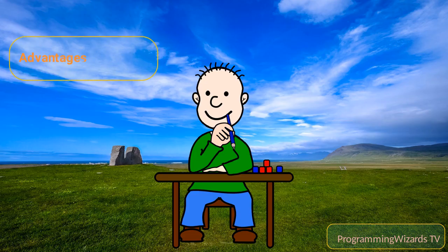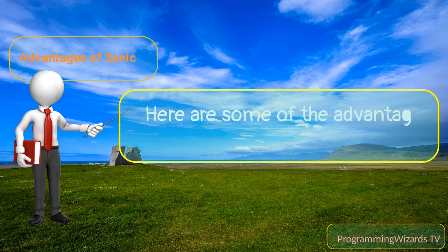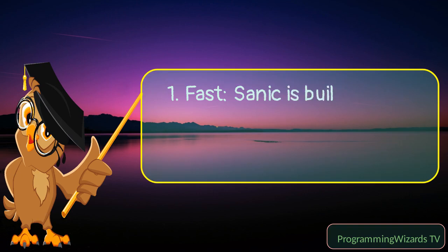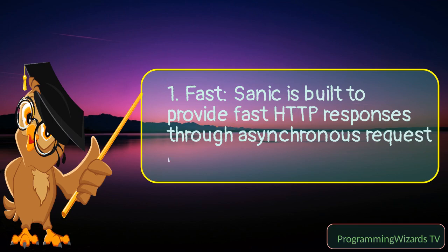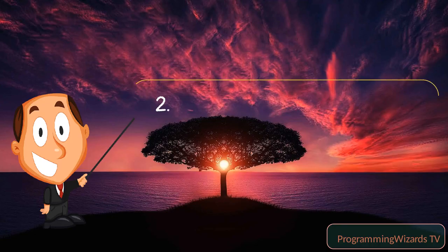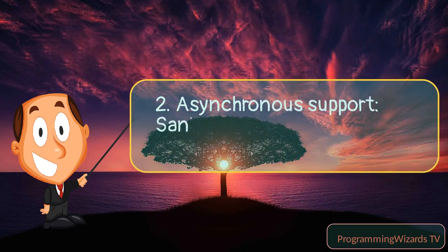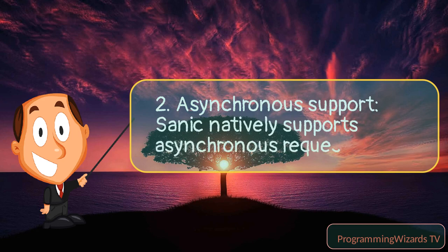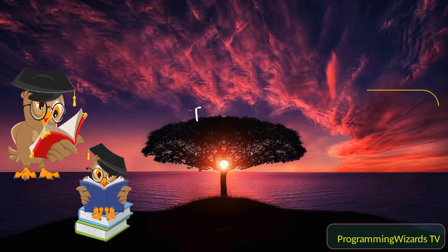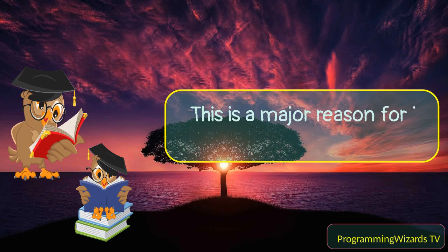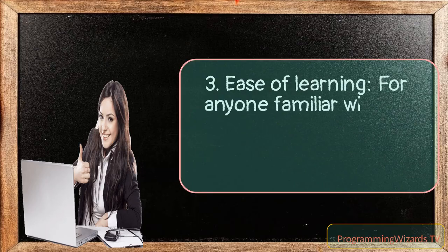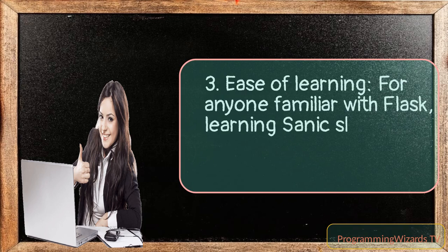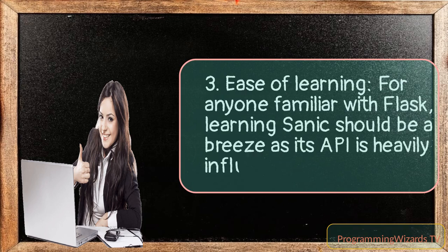Advantages of Sanic. Here are some of the advantages of using Sanic: 1. Fast — Sanic is built to provide fast HTTP responses through asynchronous request handling. 2. Asynchronous support — Sanic natively supports asynchronous request handlers, which is a major reason for its speed. 3. Ease of learning — for anyone familiar with Flask, learning Sanic should be a breeze as its API is heavily influenced by Flask.